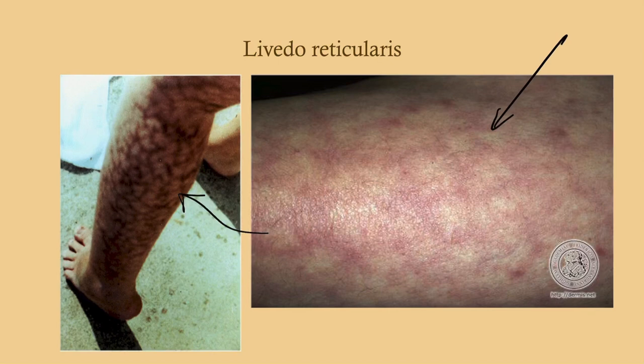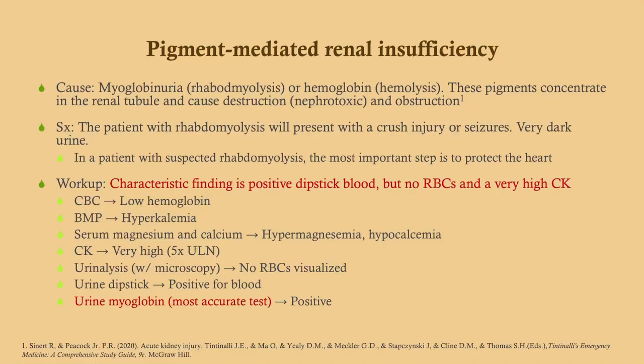Pigment-mediated renal insufficiency comes from myoglobin or hemoglobin. If myoglobin, it's typically from rhabdomyolysis; if hemoglobin, from severe hemolysis. These pigments are directly toxic to the tubules and can cause destruction or obstruction. For rhabdomyolysis, look for a history of crush injury, seizures, or drugs that reduce blood flow to muscles. These patients have very dark urine and renal failure.